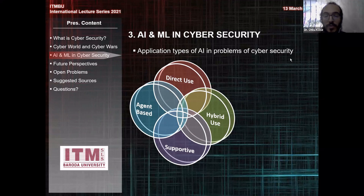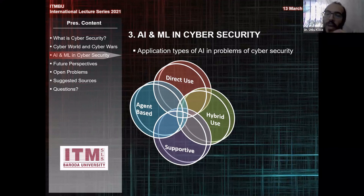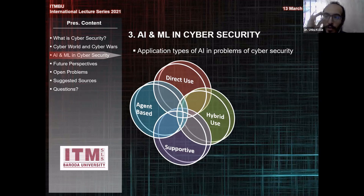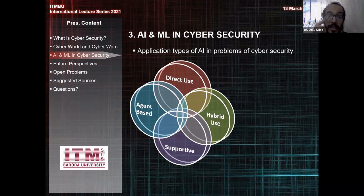You can also use AI as a supportive component for traditional methods. For example, an AI-based system can provide decision-making support to an ethical hacker — improving efficiency of human actions while working on penetration testing. You can receive feedback from an AI system working on the same target system being tested, collaboratively working so the AI supports you.